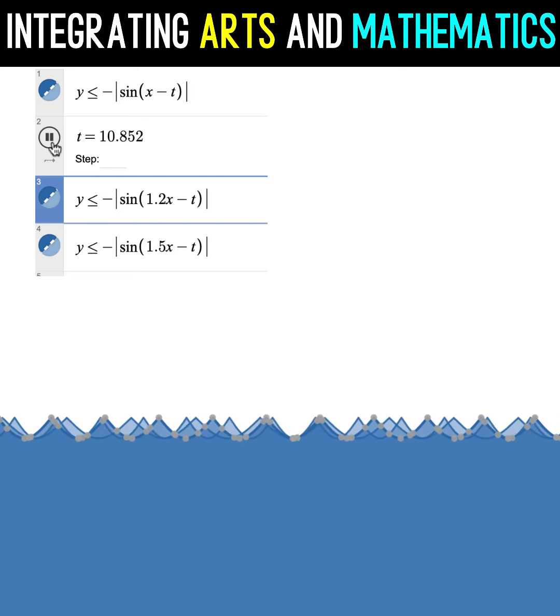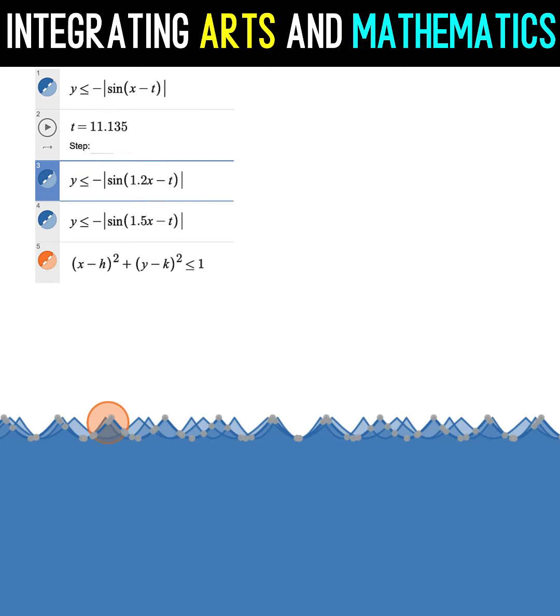Next, we want to draw our sun. So our sun is a circle. And its equation is in the form the quantity x minus h squared plus the quantity y minus k squared. If you make this just equal, notice that you only have a circle. But in order to shade it, we are going to make the inequality less than or equal to. And we now have this sun.